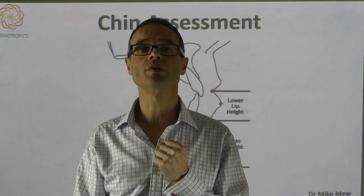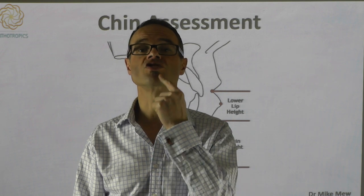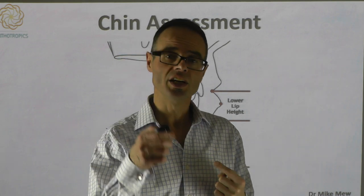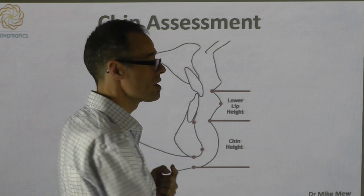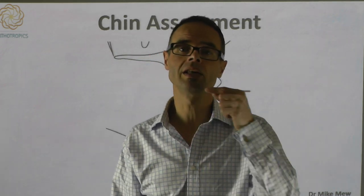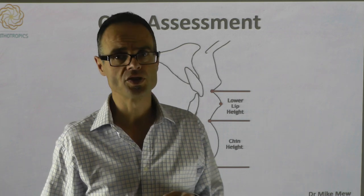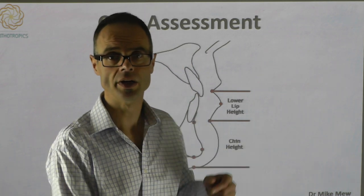People who have a very pronounced chin point, with the chin really sticking out, it's frequently because the lower teeth and lower lips are set back. In orthodontics, we have the concept of class one, class two, and class three relationships.